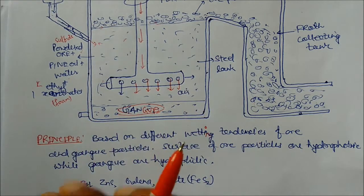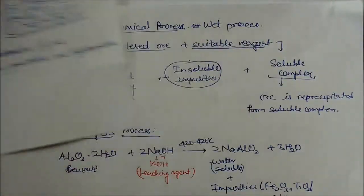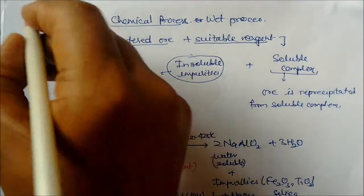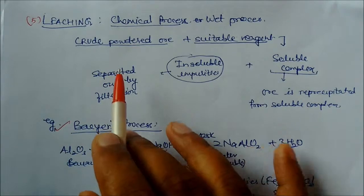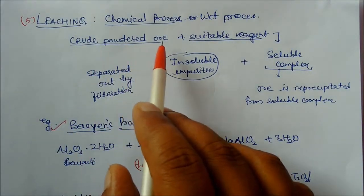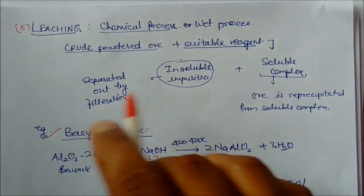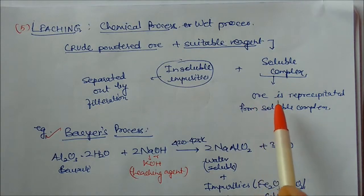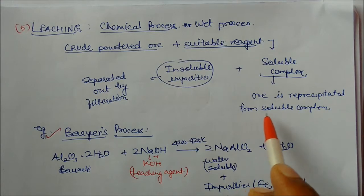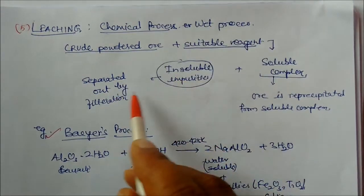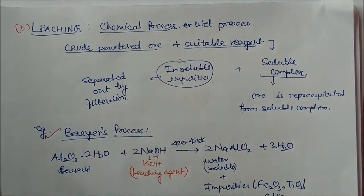After the physical processes, the next is leaching, which is a chemical process. In this process, crude powdered ore is treated with a suitable leaching agent that forms a soluble complex. This soluble complex is then re-precipitated to get the crude metal. The impurities are separated out by filtration. Let us see one example to understand this — the Bayer process.